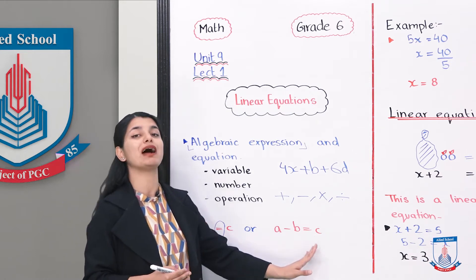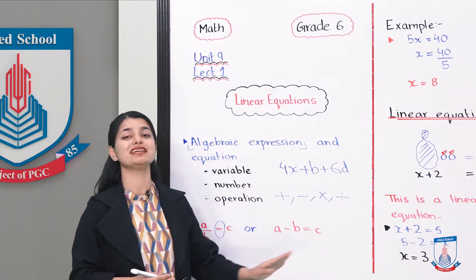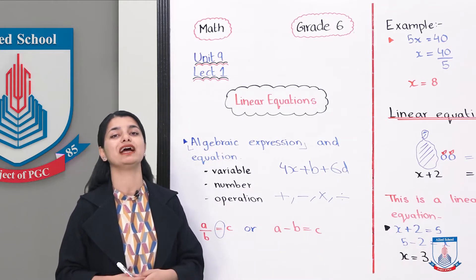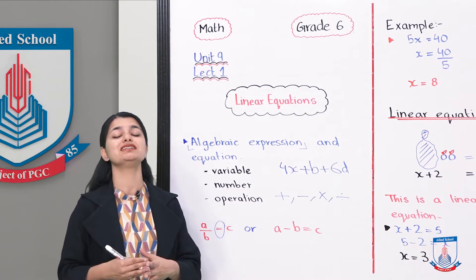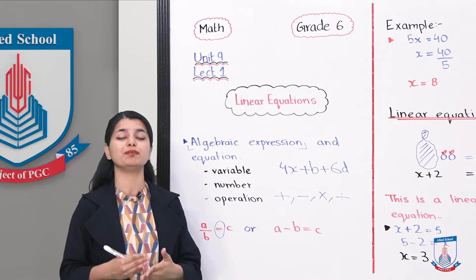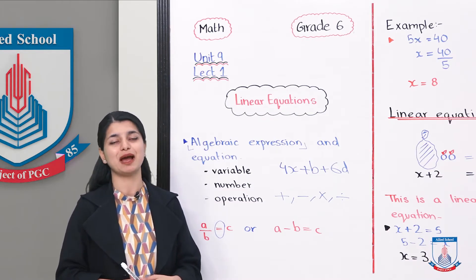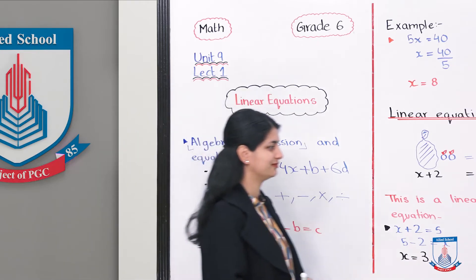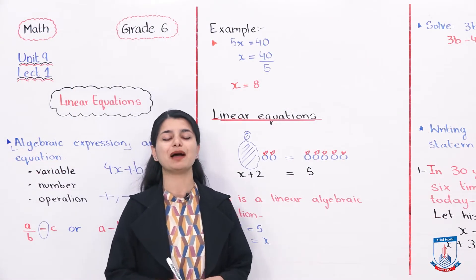When a statement has an equals sign — for example, A minus something equals C — we give these statements the name of equations, and we have to learn how to solve them. Basically these are called linear equations or simple equations. Let's see an example.